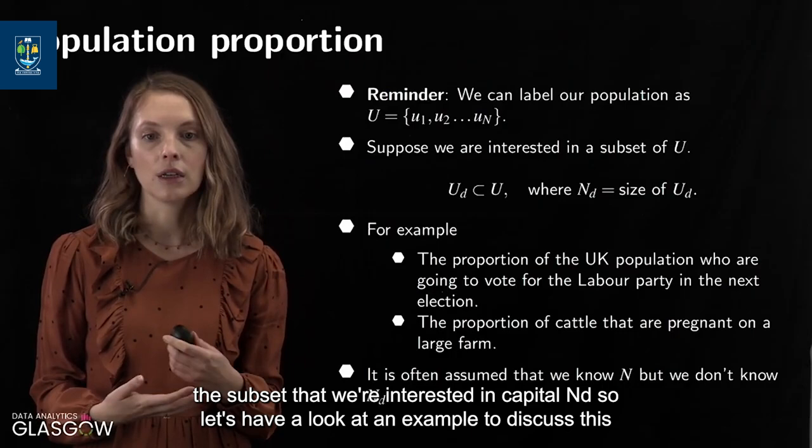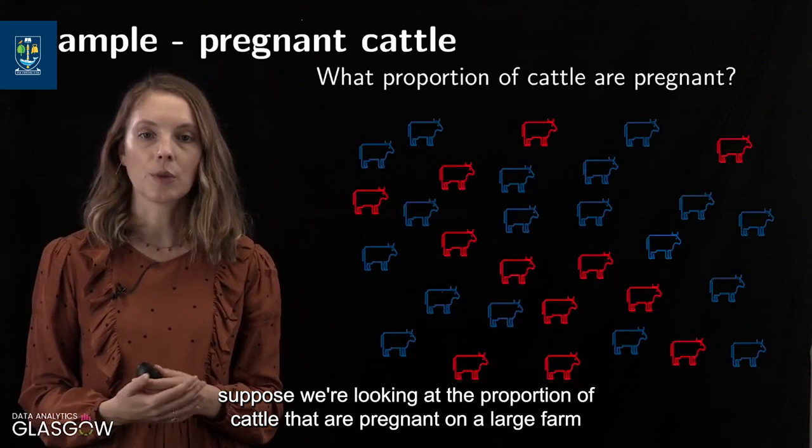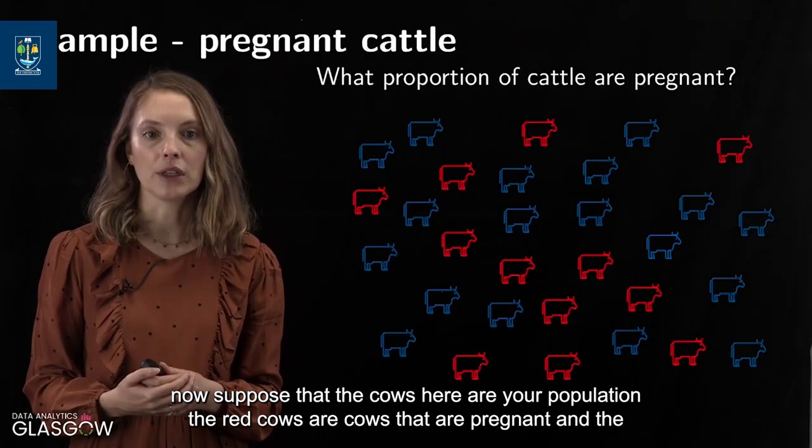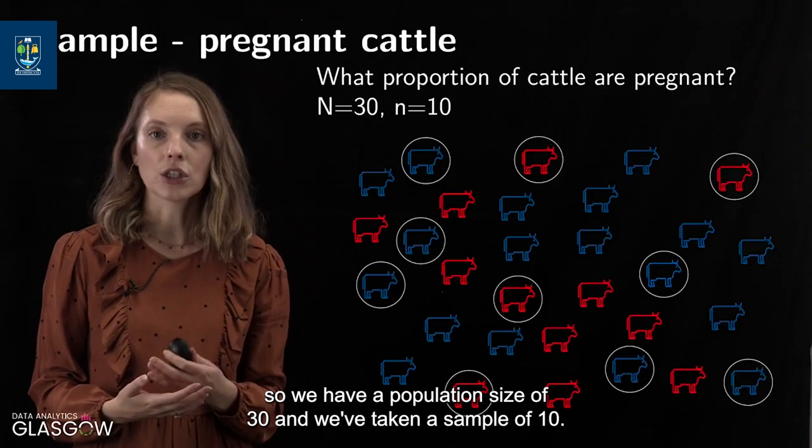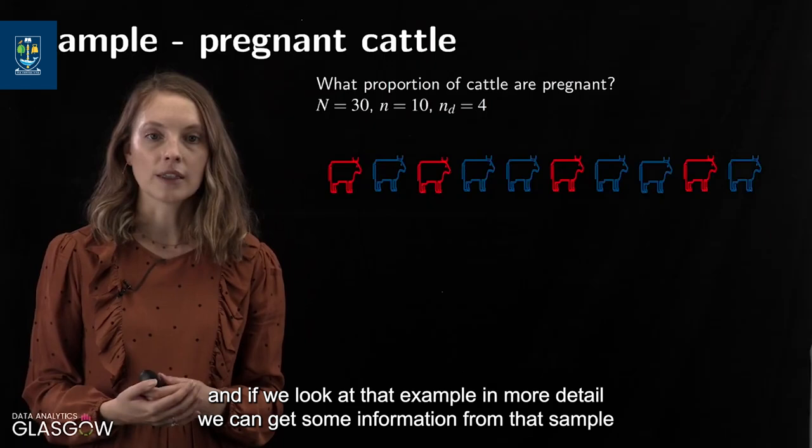Let's look at an example: the proportion of cattle that are pregnant on a large farm. The cows here are your population — the red cows are pregnant, and the blue cows are not pregnant. Suppose we take a sample: we have a population size of 30, and we've taken a sample of 10.